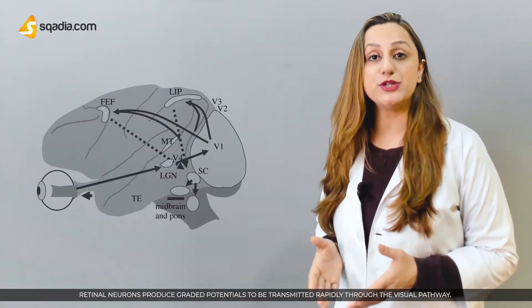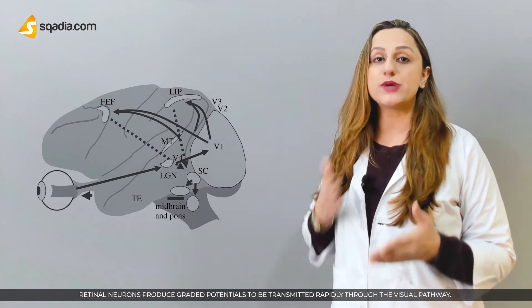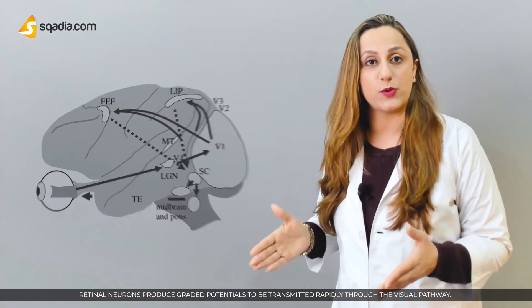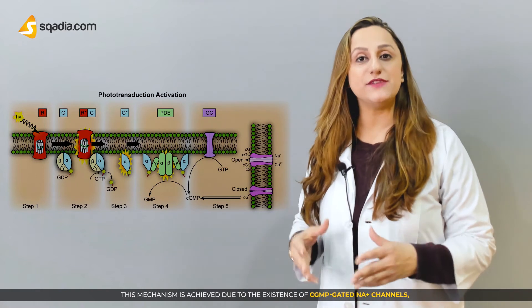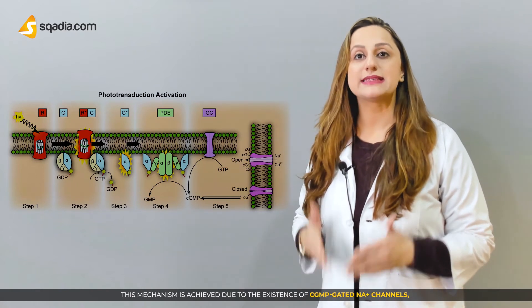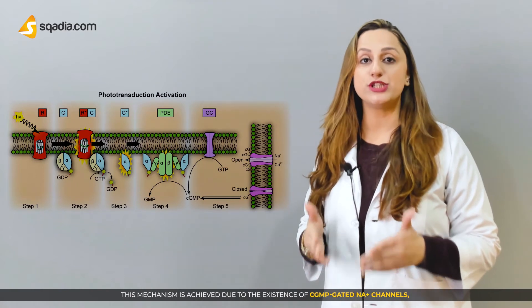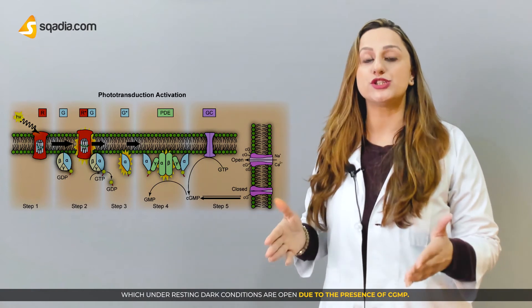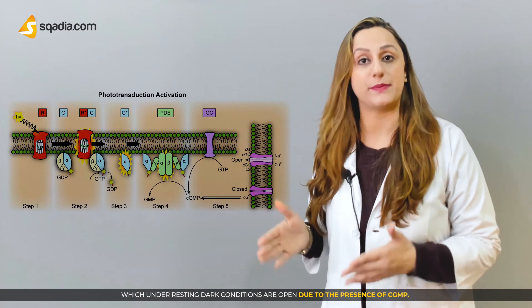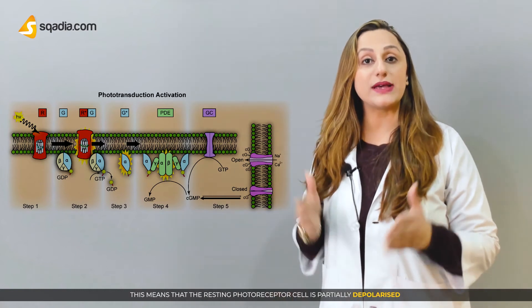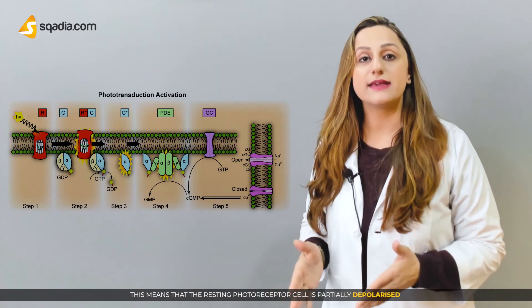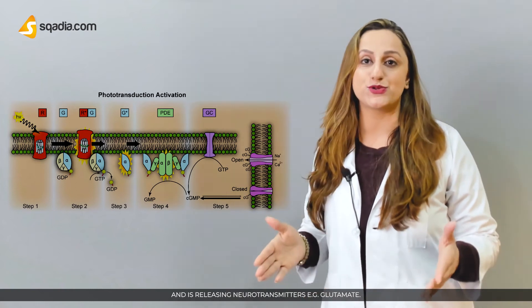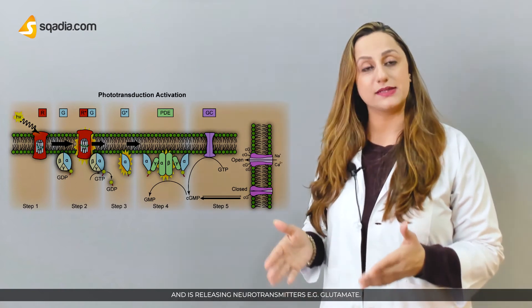Retinal neurons produce graded potentials to be transmitted through the visual pathway. This mechanism is achieved due to the existence of cyclic GMP-gated sodium channels, which under resting dark conditions are opened by the presence of cyclic GMP. This means that the resting photoreceptor cell is partially depolarized and releasing neurotransmitters, for example glutamate.